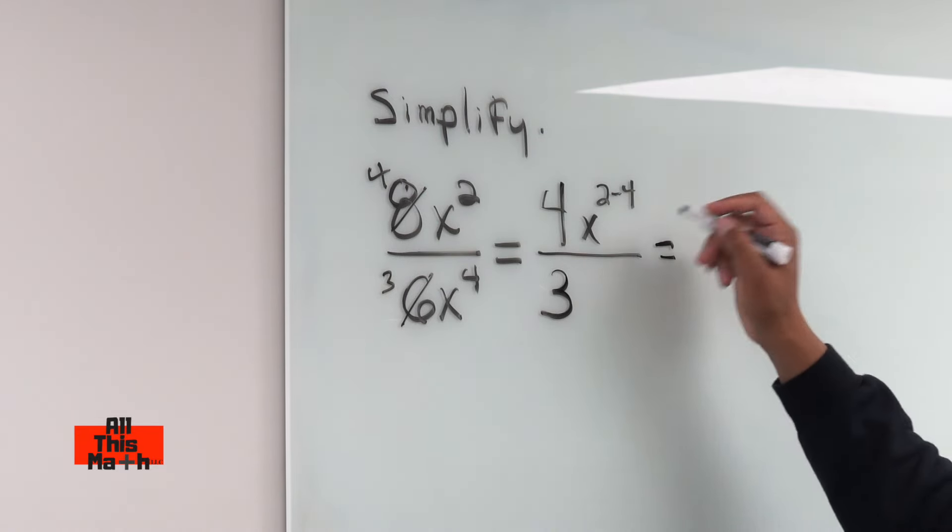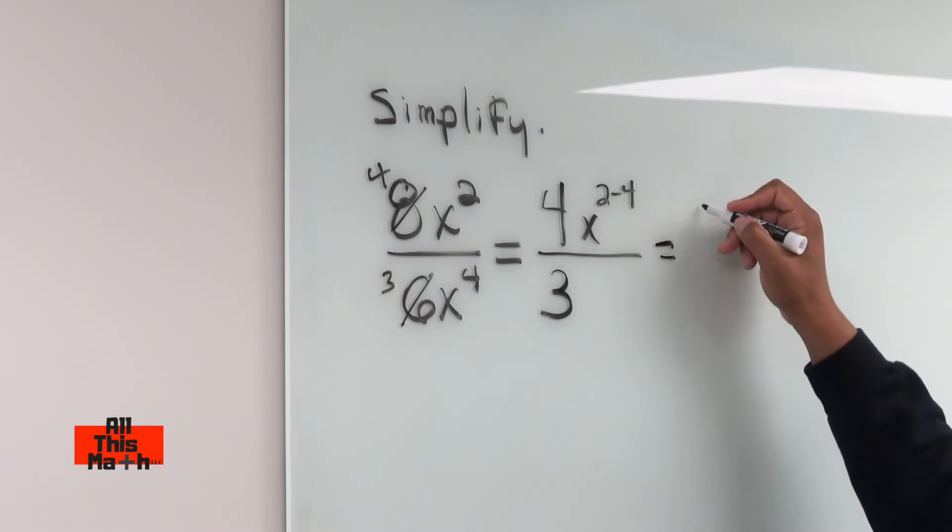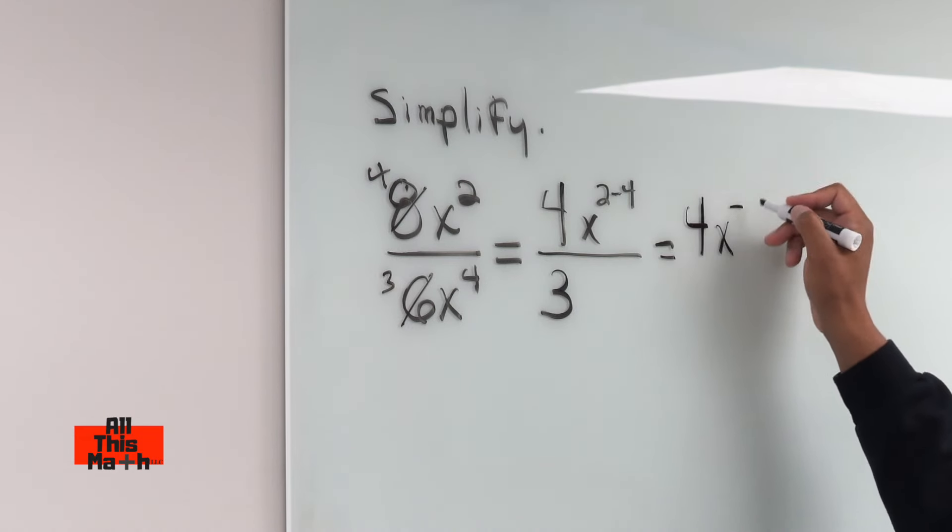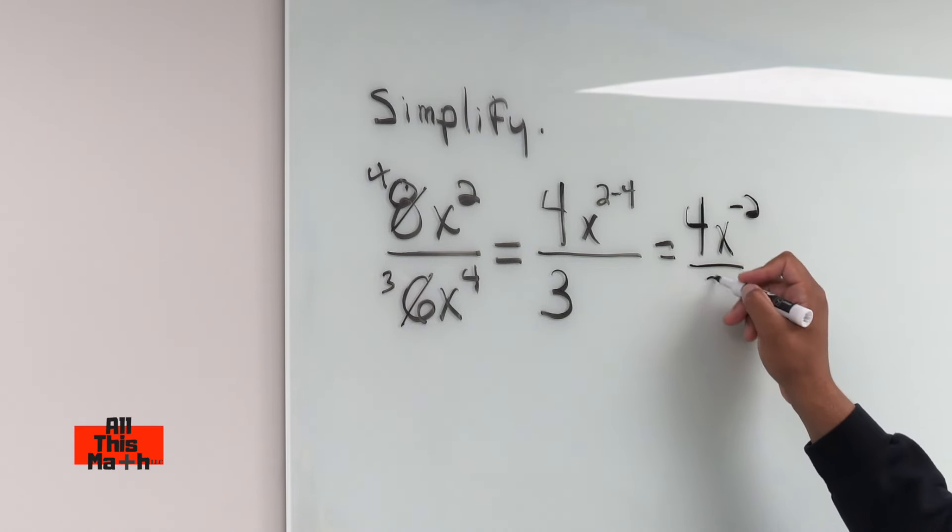And then we're going to have 2 minus 4, which is going to be negative 2. So 4x to the negative 2 power over 3.